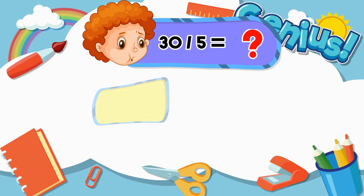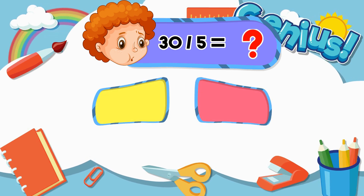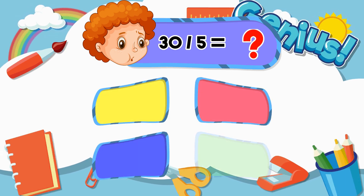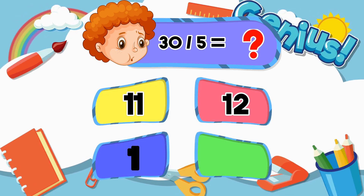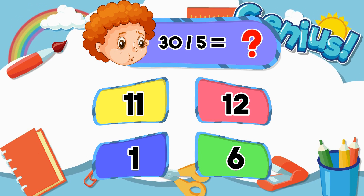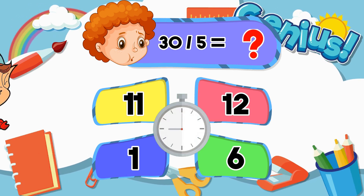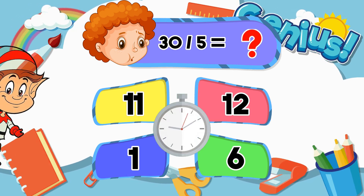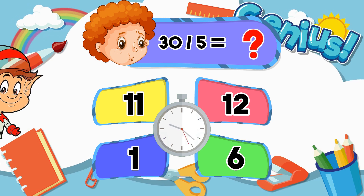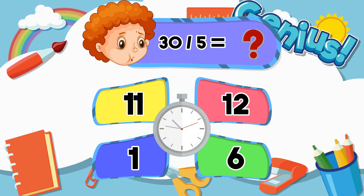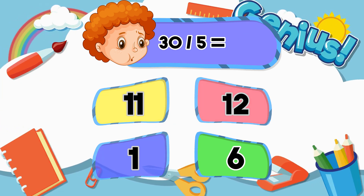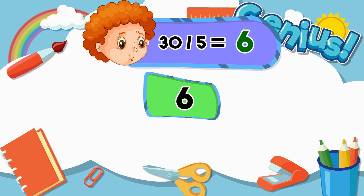What is 30 divided by 5? 11, 12, 1, 10. Answer: 6.